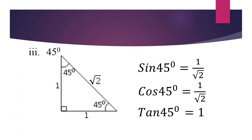Our third special angle is 45 degrees. We're going to consider another right-angled triangle in which one of the angles is 45 degrees and the other angle is also 45 degrees. The shorter sides are 1 unit by 1 unit. We can get the hypotenuse by Pythagoras' theorem as root 2. Sin 45 is 1 over root 2, cos 45 is 1 over root 2, and tan 45 is 1.